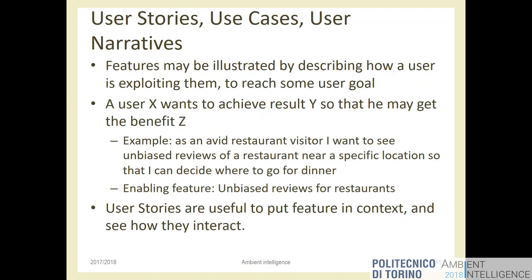One useful approach is to imagine people using the system: a person walks in the room and waves at the sensor — why? Maybe to activate some function. Users interact with the system with a purpose. The system doesn't have a purpose — it's a machine — but users do, and the system should provide features to help them reach those purposes.